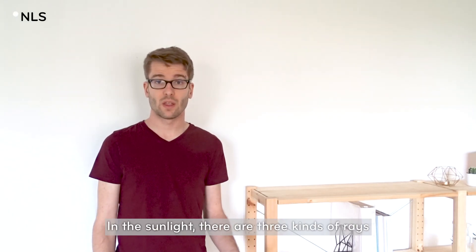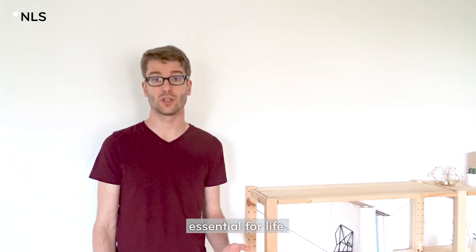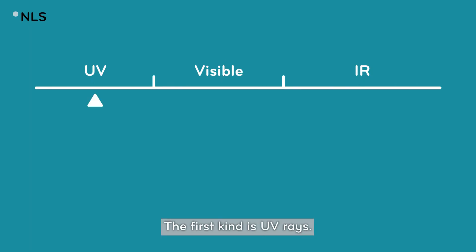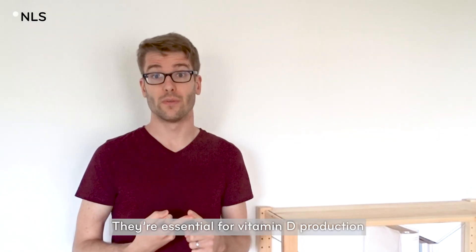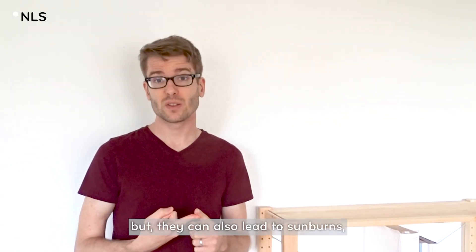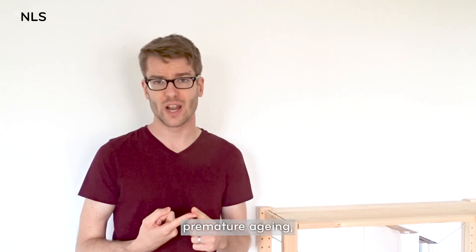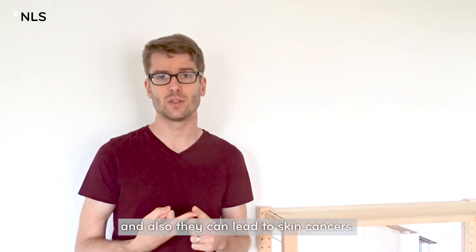In the sunlight, there are three kinds of rays essential for life. The first kind is UV rays. They are essential for vitamin D production and tanning, but they can also lead to sunburns, premature aging, and skin cancers.